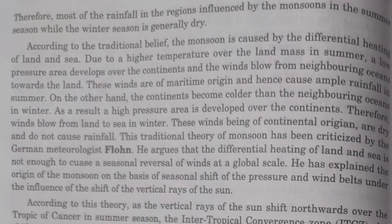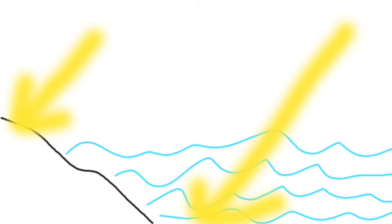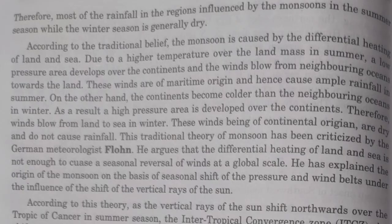One thing we need to know is that land is opaque and water is transparent. Land, being opaque, quickly gets heated up and rapidly cools down, whereas water, being transparent, takes time to heat up as well as time to cool down.